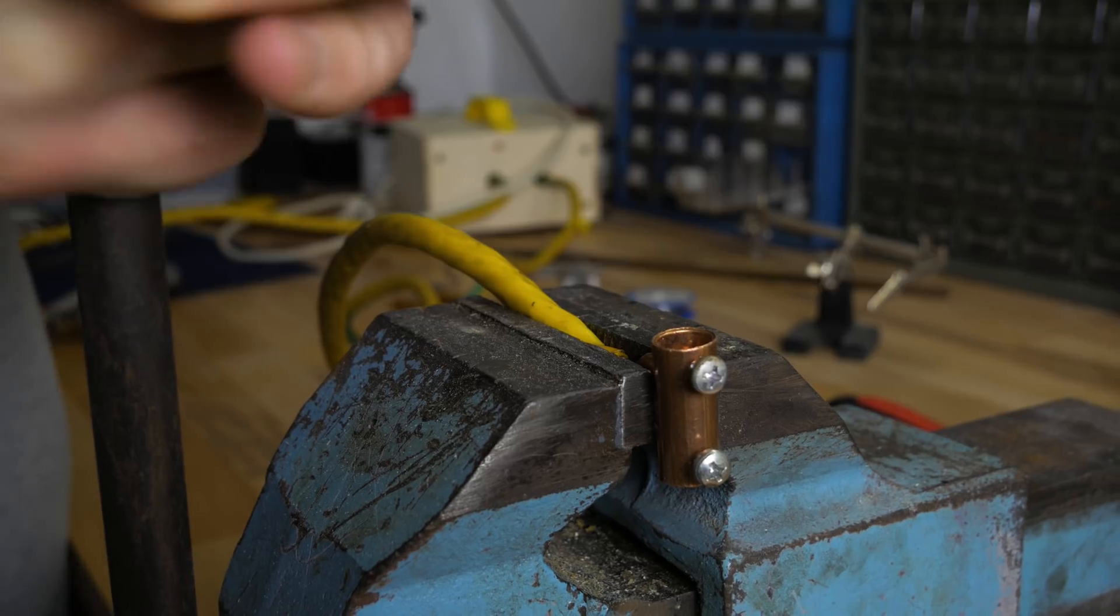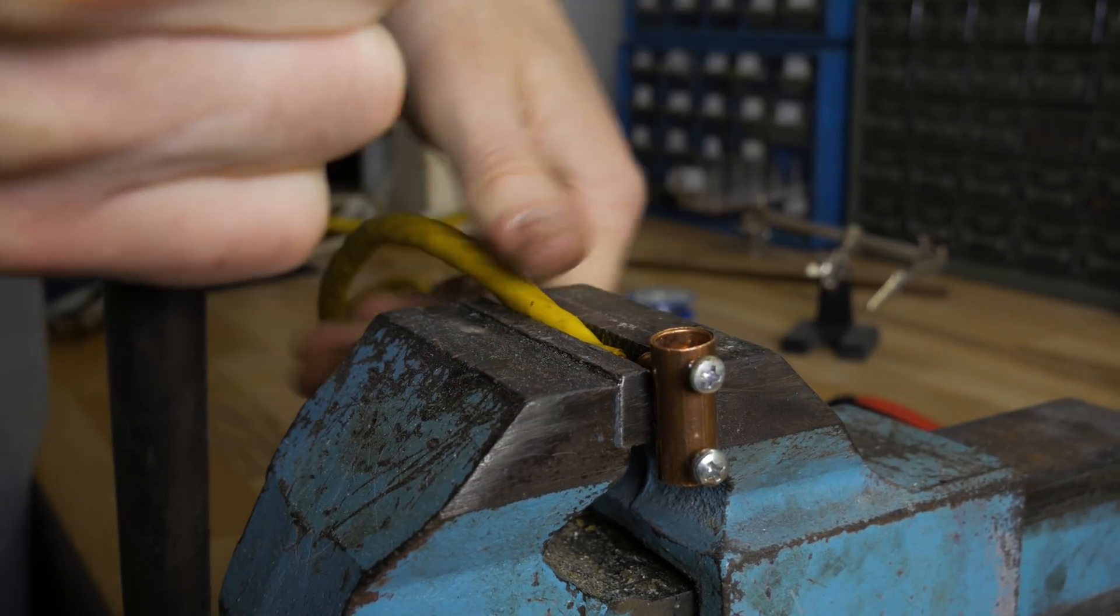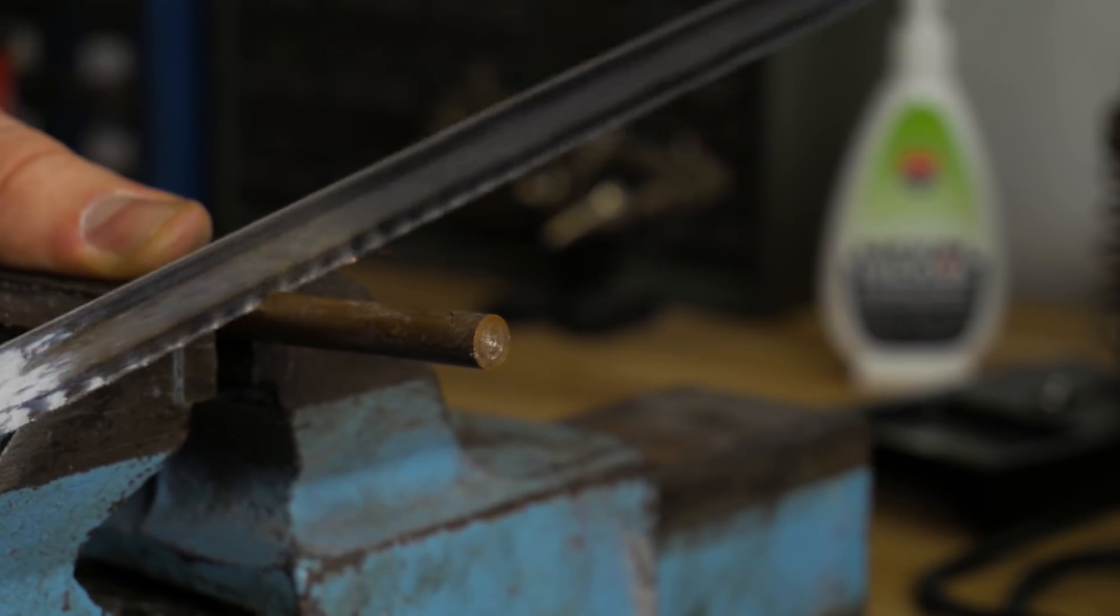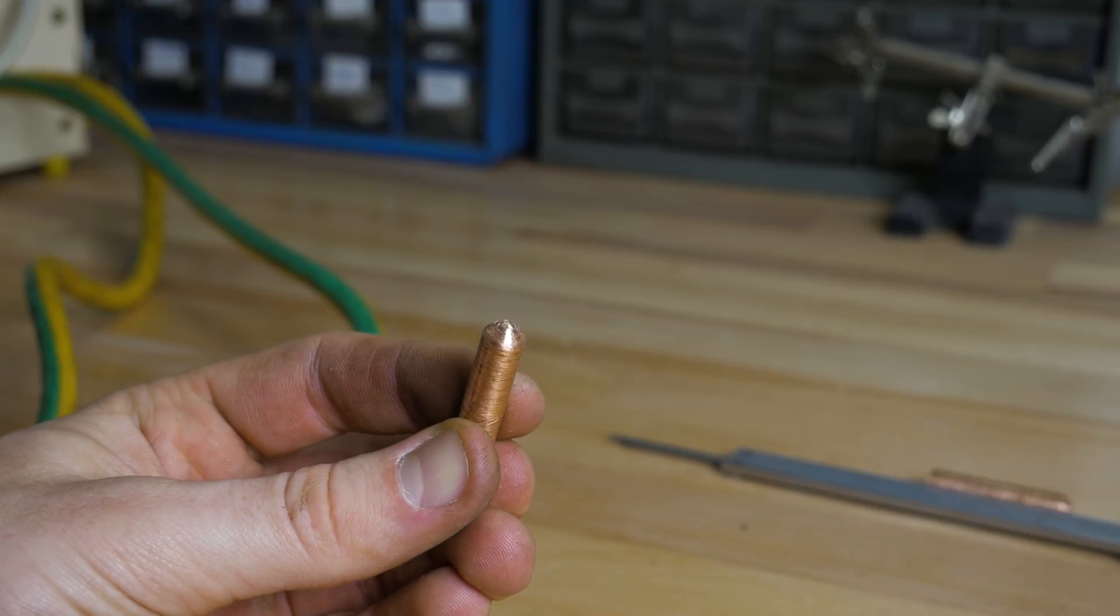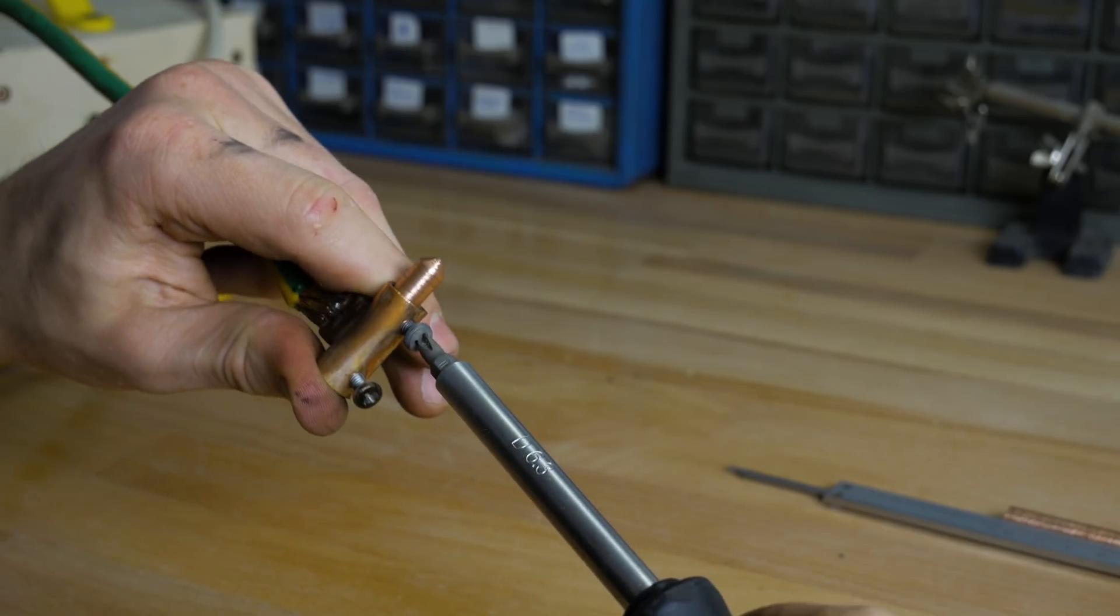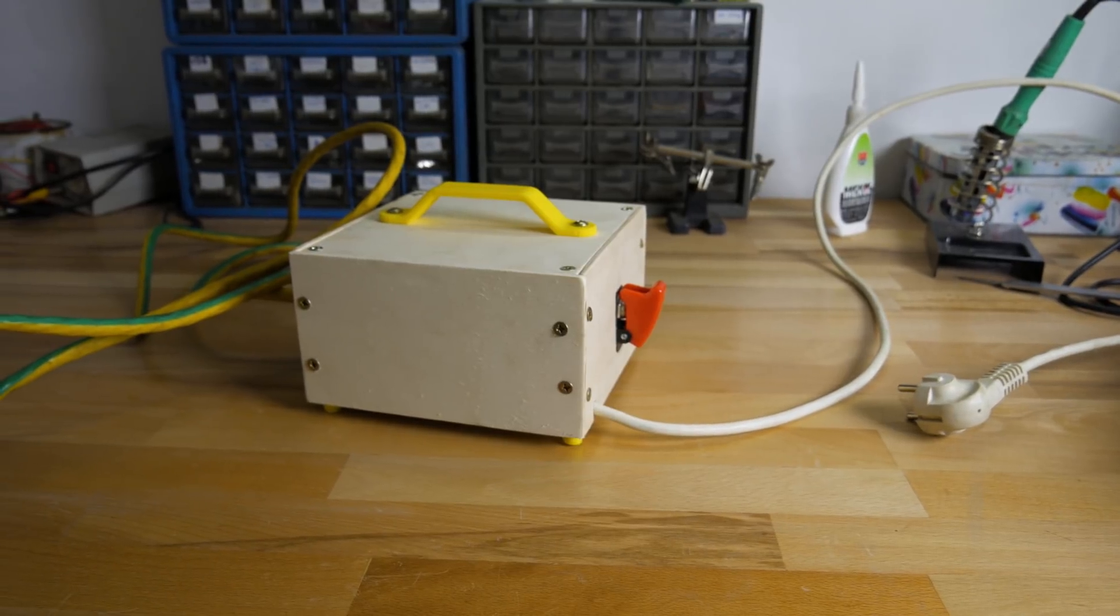Then I press the plug hard into the vice and that's it. I also cut a few centimeter long copper rod, make a chamfer on one end, secure it into the plug with two screws and the spot welder is finished.